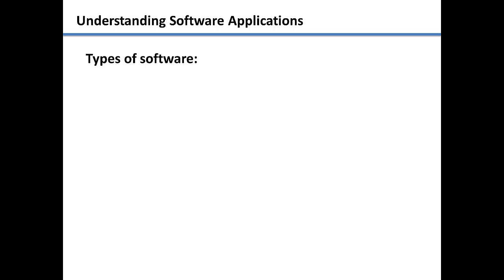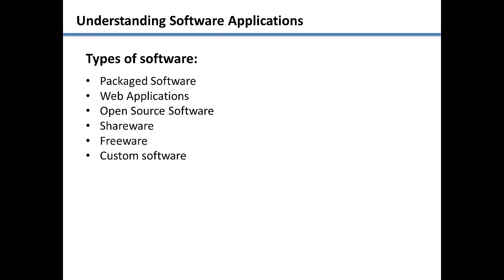There are many types of software available, such as packaged software, web applications, open source software, shareware, freeware, and even custom software. Let's go over the different types of software that you can get.